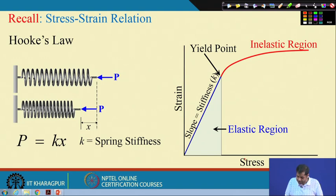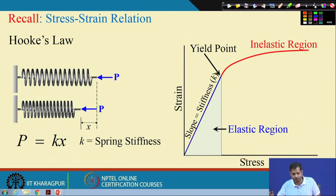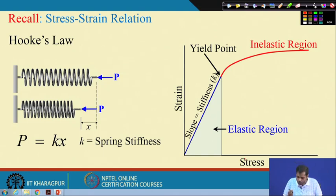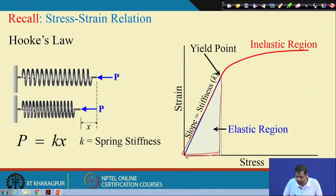This is a general stress-strain diagram. Along the blue line — the linear elastic region — Hooke's law is valid: stress and strain are linearly related. Beyond that you can have non-linear or inelastic zones. For this course and all the following discussion, we are only interested in this linear elastic region.